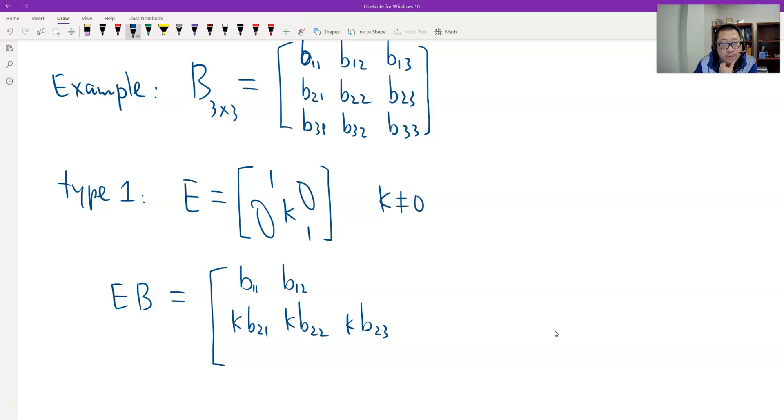B11, B12, B13, B31, B32, B33. Right? In this case, I think it's easy to get. After that.